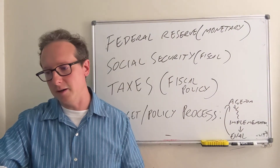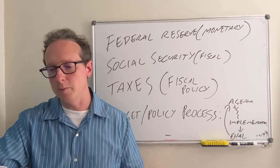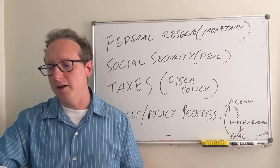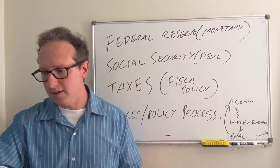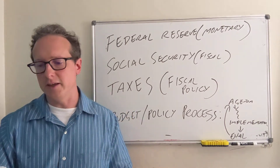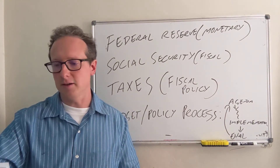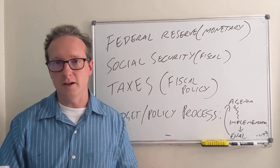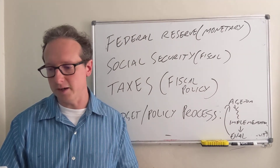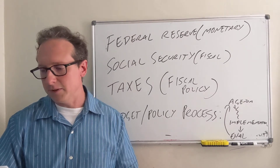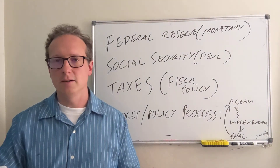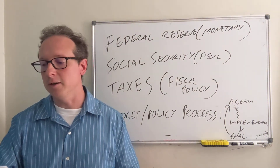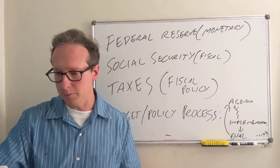Medicaid is very different. Medicaid is the program for poor and low-income folks — in California it's called Medi-Cal. When I moved here in 2016, I discovered that about 40% of Californians, and more in some counties in the Central Valley, are actually funded in terms of their health insurance through Medi-Cal. It's administered by the states. So to keep it straight: Medicaid or Medi-Cal is for the poor and low-income; Medicare is for seniors and the disabled.